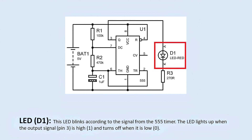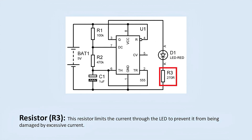Light-emitting diode D1: This light-emitting diode blinks according to the signal from the 555 timer. The light-emitting diode lights up when the output signal is high and turns off when it is low. Resistor R3: This resistor limits the current through the light-emitting diode to prevent it from being damaged by excessive current.